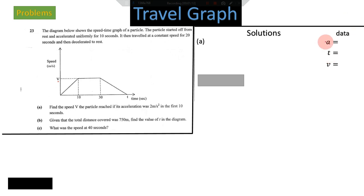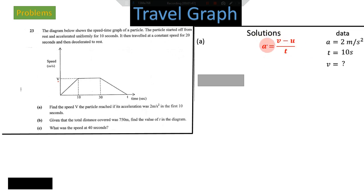We've been given acceleration a = 2 m/s², and the time is 10 seconds. We need to find v, the final velocity, which we do not know. The formula we're going to use is the formula for acceleration: acceleration equals final velocity minus initial velocity, divided by time taken.